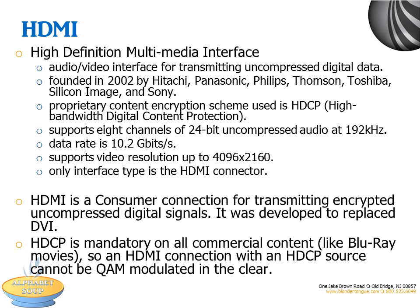This proprietary high-bandwidth digital content protection was developed by a consortium of companies. HDMI supports 8 channels of 24-bit uncompressed audio. It has a data rate of 10.2 Gbps and supports video resolution up to 4096 by 2160. HDMI is a consumer connection for transmitting encrypted uncompressed digital signals, developed to replace DVI, which we'll get into in a minute.